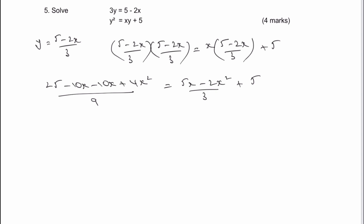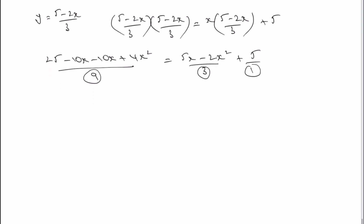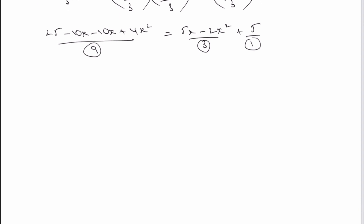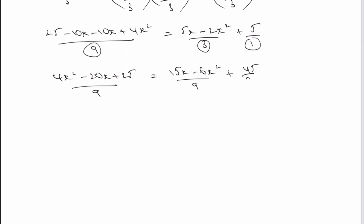The problem is I've got a denominator of nine, a denominator of three, and effectively a denominator of one, so I'm going to make them all the same — a denominator of nine. I can leave the first fraction as is, but tidied up in ascending order: four x squared minus 20x plus 25, all over nine. On the right-hand side, I multiply each term by three to get 15x minus six x squared all divided by nine, plus 45 over nine.